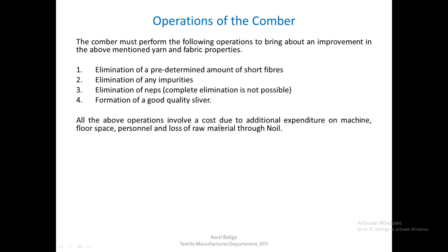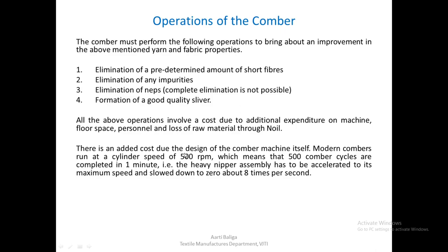All the above operations involve a cost due to the additional expenditure on the machine, floor space, the personnel working on the machine, as well as loss of raw material through noil. Since we are introducing three machines — two for Comber preparatory and one for Comber — we incur extra cost along with floor space, personnel required to run those machines, and the extra cost of raw material removed in the form of noil. There is also an added cost due to the design of the Comber machine itself.